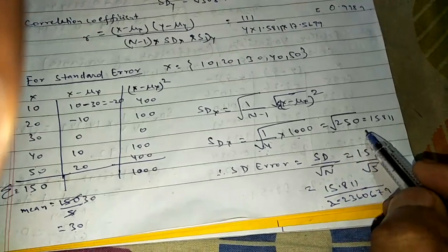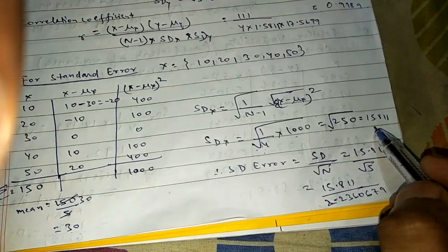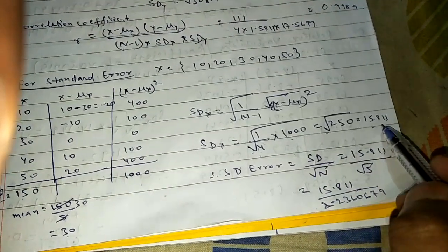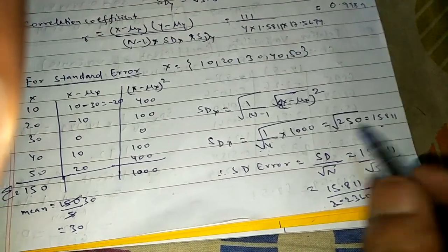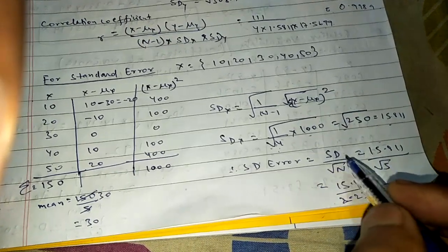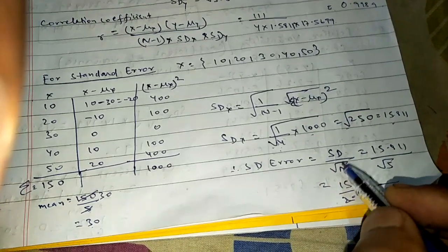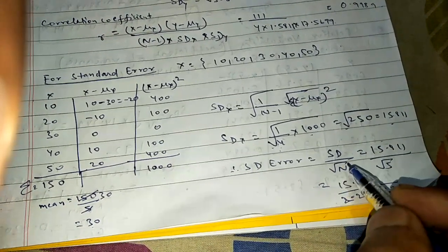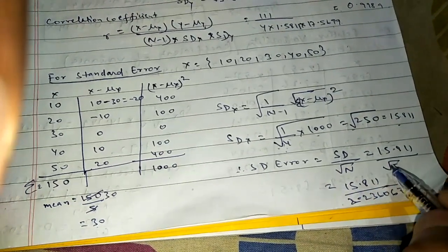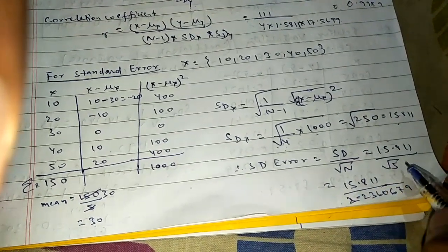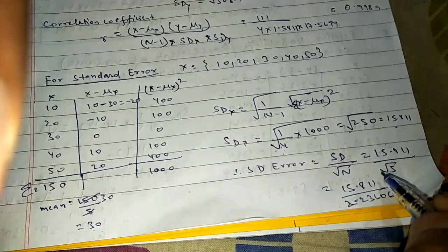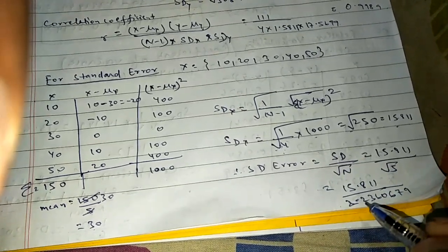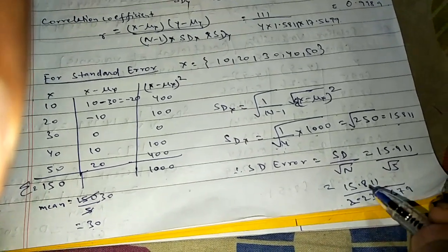The root of 1000 divided by 4 equals the square root of 250, which is 15.81. The standard error is simply the standard deviation divided by the square root of n. The square root of 5 is 2.237, so divide 15.81 by 2.237 to get the standard error.